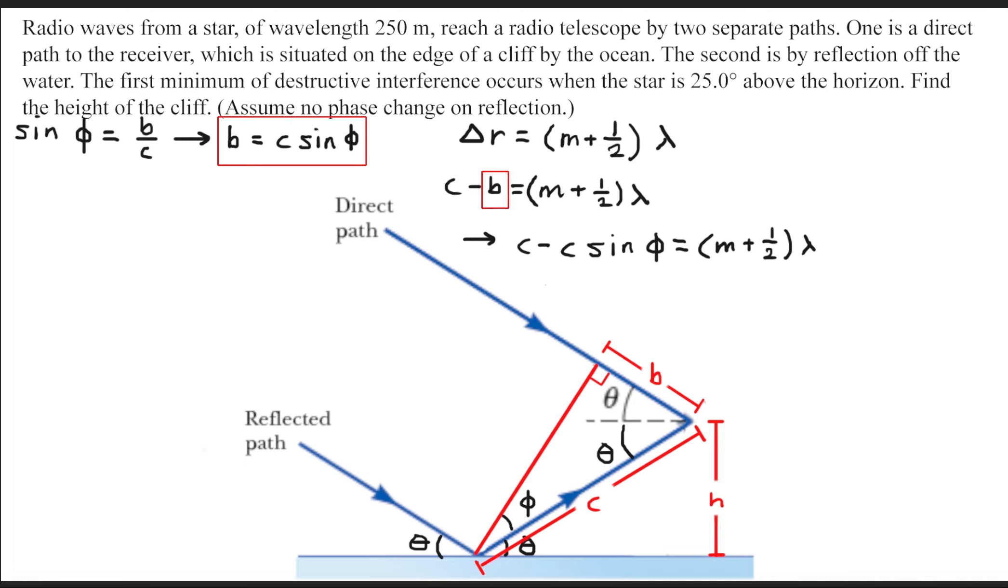We'll simplify this expression by factoring out the C variable and substituting in the value of zero for M. The reason I use the value of zero for M is because of this statement. It says the first minimum of destructive interference occurs when the star is 25 degrees above the horizon. In order to achieve the first minimum, we would need our M value to be zero.